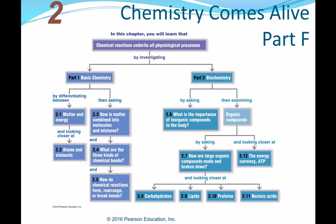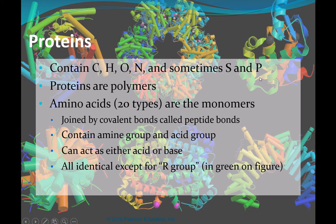Welcome to part six of our chemistry series, focusing on organic compounds. We're going to talk about section 2.10, all about proteins. Proteins contain carbon, hydrogen, oxygen, nitrogen, and sometimes sulfur and phosphorus. They are polymers made up of tiny building blocks, and for proteins the monomer is what we call amino acids. There are 20 different types of amino acids.